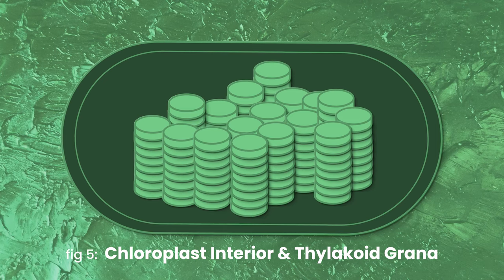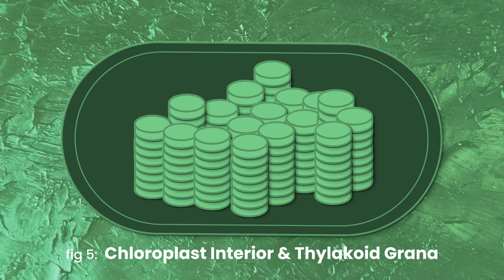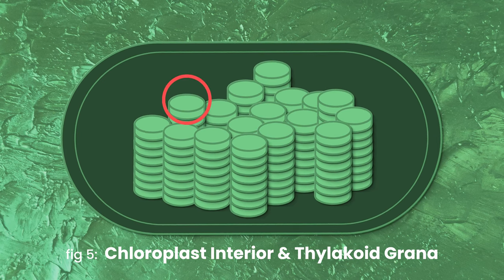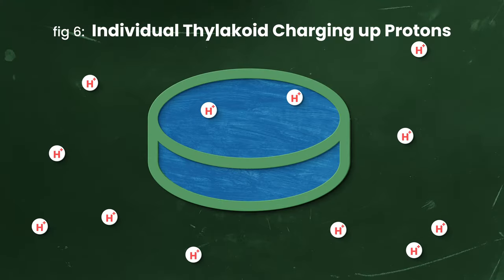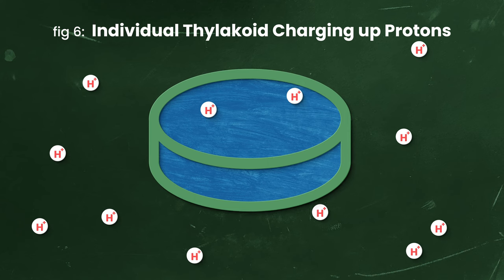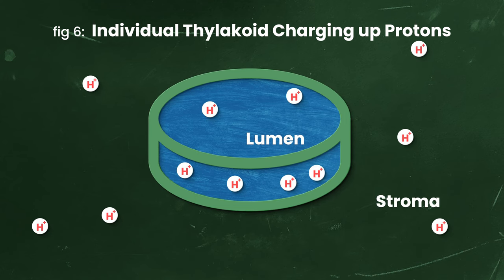Remember, this whole thing is happening inside the chloroplast of our plant cell. In here, we've got a bunch of disc-shaped energy converters called thylakoids. Our electrons are going to turn this thylakoid into a power plant by helping push protons from the outside of the thylakoid, called the stroma, to the inside, called the lumen.